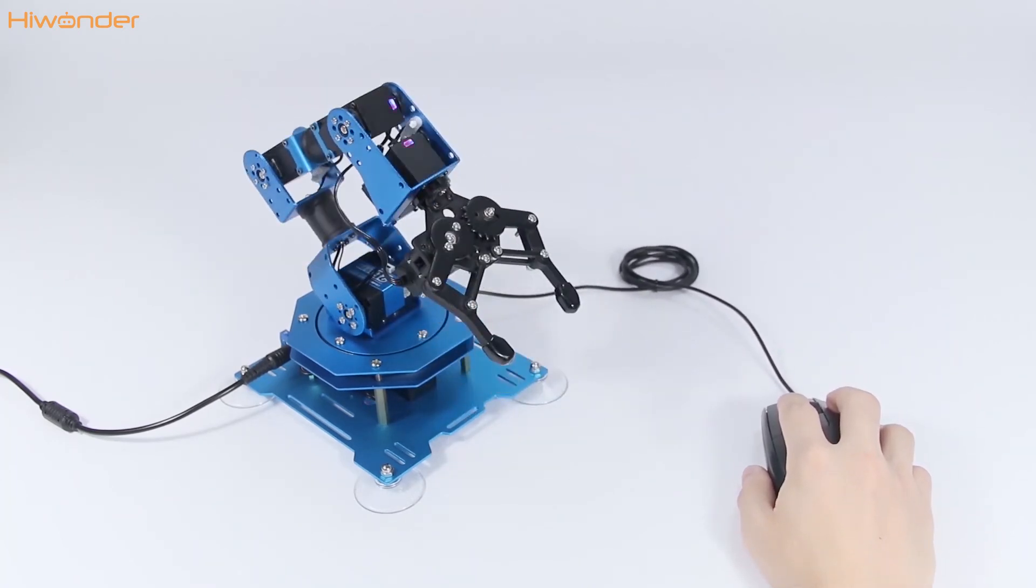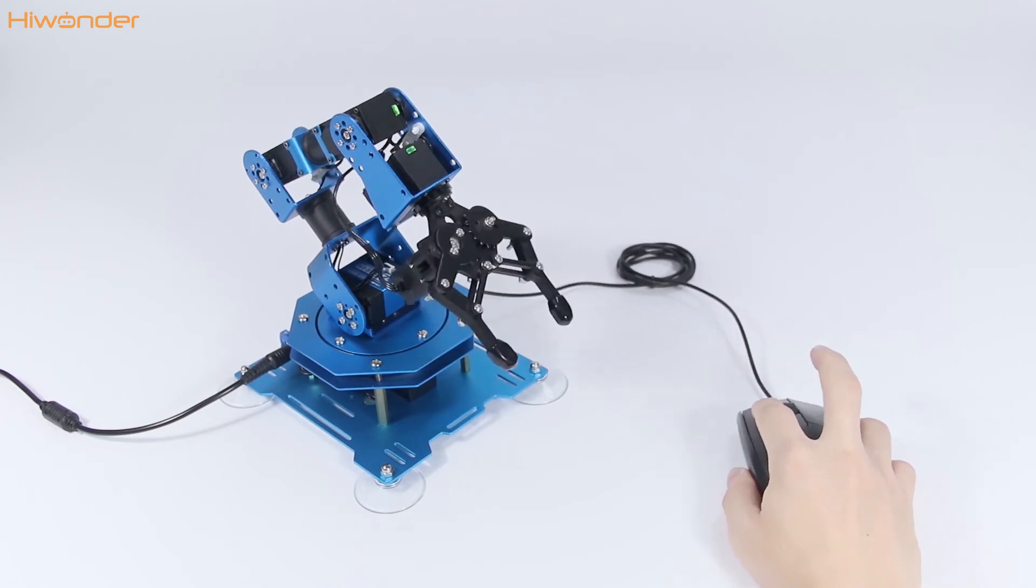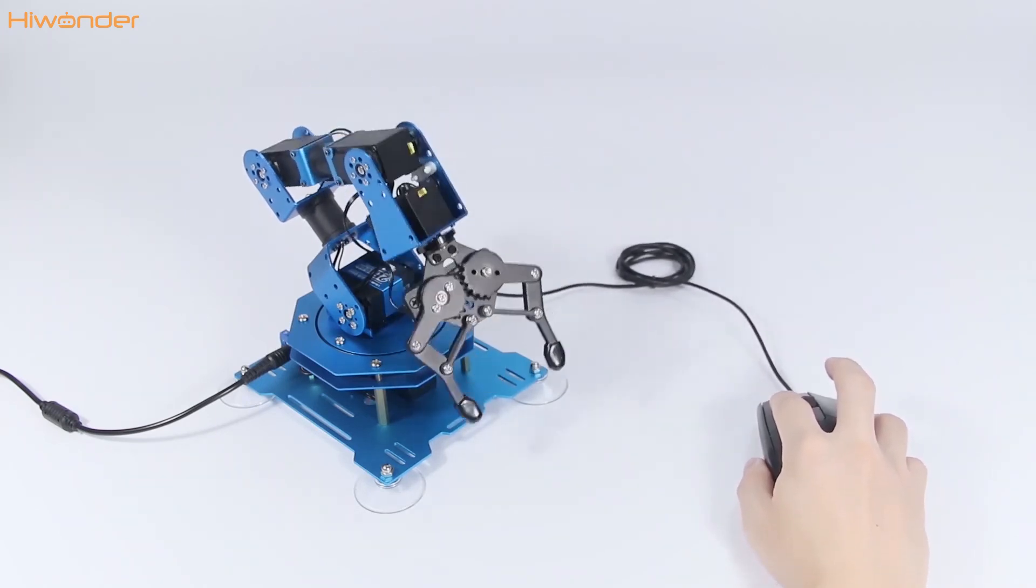For example, click the left mouse button and move left and right to control the number 2 servo, and move up and down for the number 4 servo.